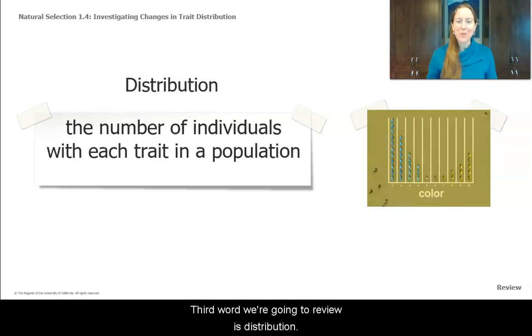The third word we're going to review is distribution. Distribution is the number of individuals with each trait in a population. So looking at our australopes, the distribution shows that most of the australopes are blue, some of them are yellow, and very few of them are green. So we'll look at a variety of distributions in our organisms.